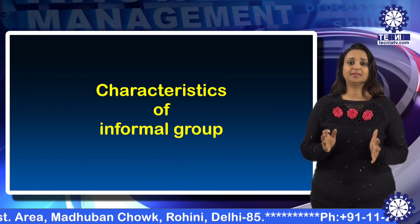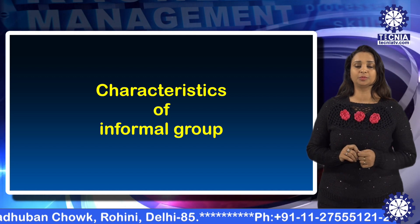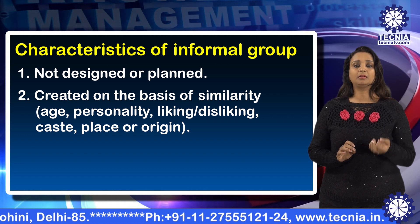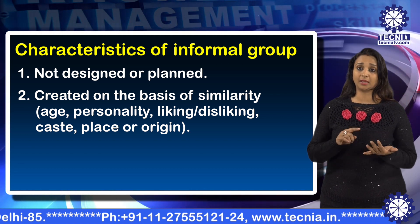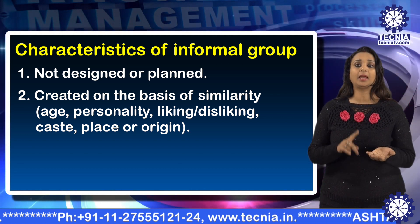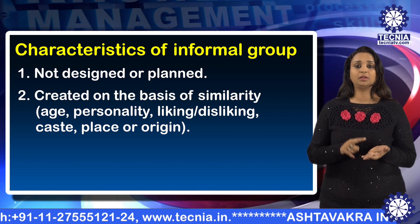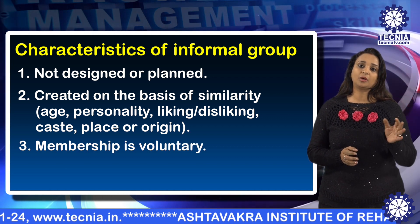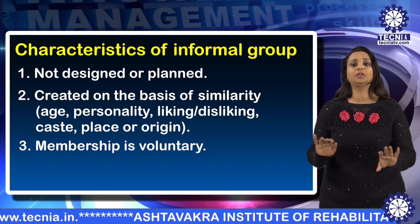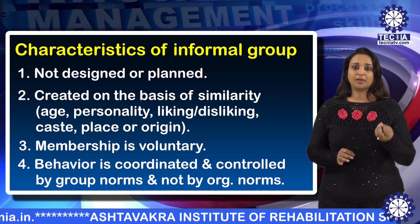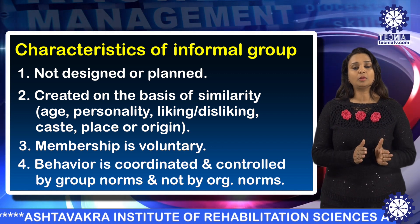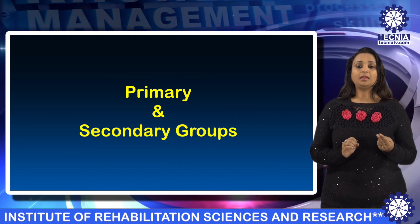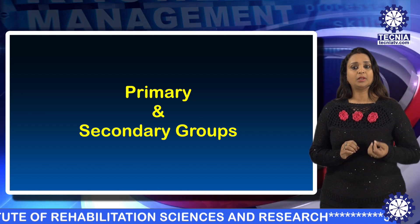Features of formal groups include: the organizational structure is designed by top management, the structure is based on division of labor, people are placed in a particular hierarchy, and coordination and control among all members are as per defined rules and procedures. For informal groups: they are not designed or planned; they are created on the basis of similarity like age, personality, liking, caste, and place of origin; membership is voluntary; and behavior is coordinated by group norms, not organizational rules.